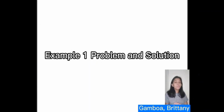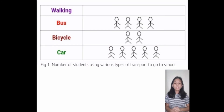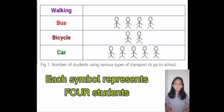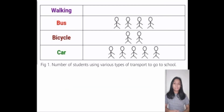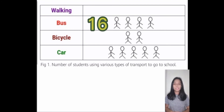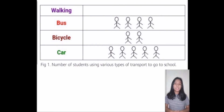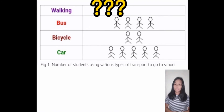The example problem and its solution. The pictograph shows the number of students using various types of transport to go to school. Each symbol represents 4 students. There are 16 students who ride the bus to school. 8 are cycling. 20 are going to school by car. Let us find out how many students are going to school by walking.